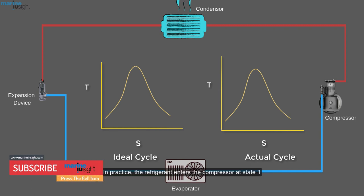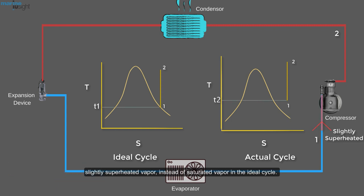In practice, the refrigerant enters the compressor at state 1, slightly superheated vapor, instead of saturated vapor in the ideal cycle.